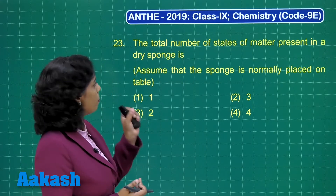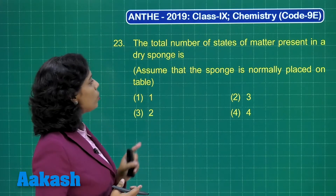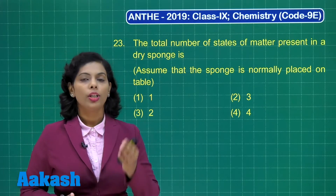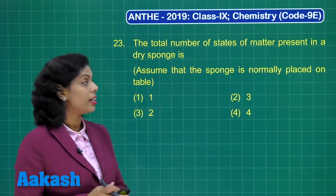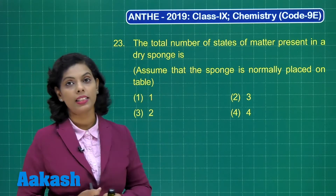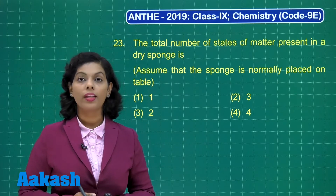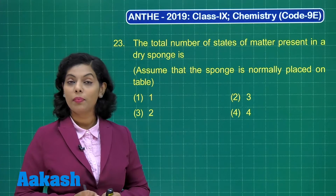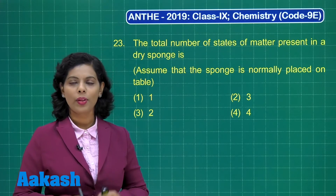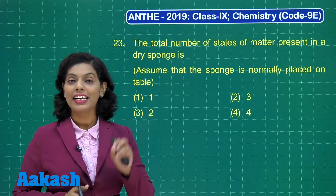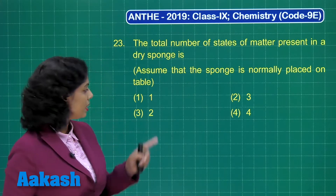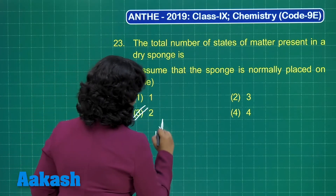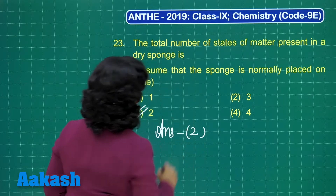Now question number 23: what is the total number of states of matter present in a dry sponge, assuming it is normally placed on a table? Sponge itself is a solid, and air is present inside the tiny holes of the sponge. So there are two states of matter — solid and gas. On the basis of this, the answer is option 3, which gives the value two.